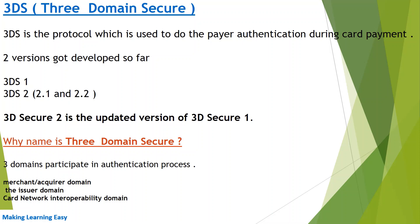Two versions of 3DS have been developed so far: 3DS 1 and 3DS 2. In 3DS 2 we have versions 2.1 and 2.2, with 2.2 being the latest. 3DS 2 is the updated version of 3DS 1, offering more features than 3DS 1.